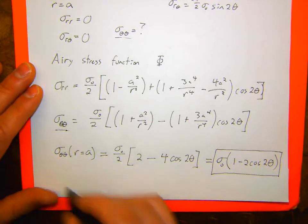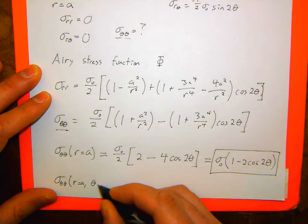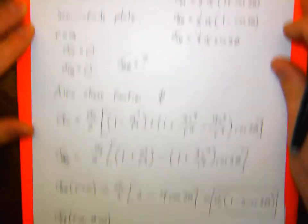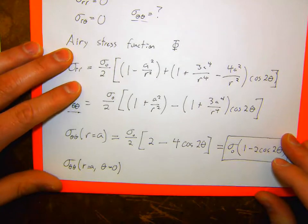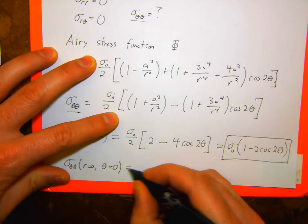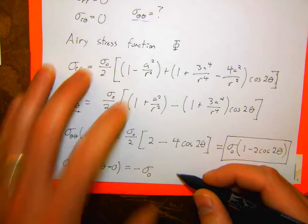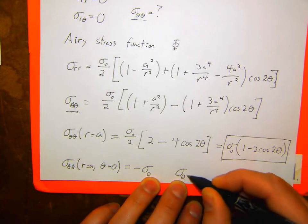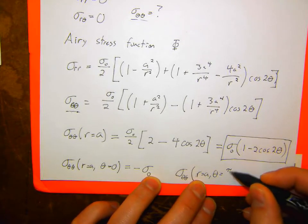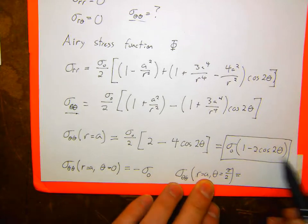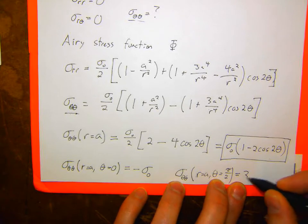If I plug in theta = 0, that's the point along the direction of the applied stress, and I get 1 − 2 = −1, so I actually get a compressive stress of negative sigma_naught along that edge. Along the top edge at theta = π/2, cosine of π is −1, so I get 1 + 2 = 3, which gives 3 sigma_naught. So the maximum tensile stress is 3 sigma_naught at the top and bottom, and the minimum is a compressive −sigma_naught at the sides.